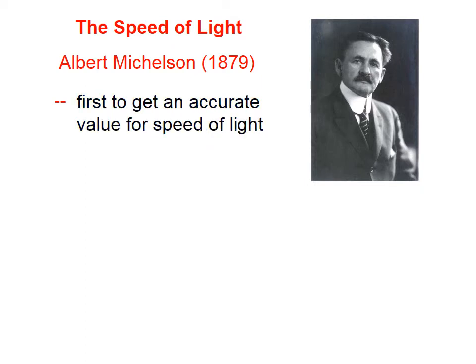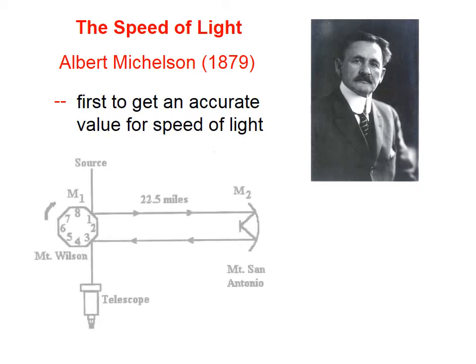Albert Michelson was the first person to get an accurate value for the speed of light. In the late 19th century, Michelson did an experiment involving two mountains, one telescope or eyepiece, a source of light, and a series of mirrors.